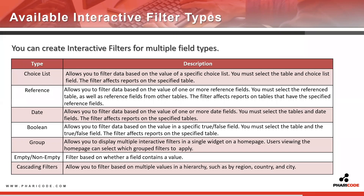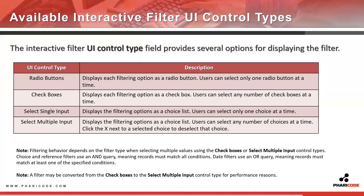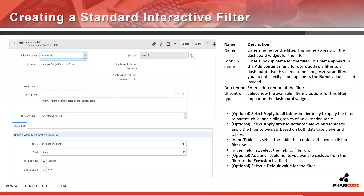ServiceNow offers seven different types of filters that you can create. The selection is limited, so if there are other field types that you want to filter on, you would need to create your own custom filters. For the standard ones, you have choice, reference, state, and boolean field types. You can also create group filters to display multiple interactive filters in a single widget, filter based on whether a field contains a value or not, and cascading filters that allow you to filter based on multiple values in a hierarchy. The UI control type gives you options for displaying the filter as radio buttons, checkboxes, or single or multiple input choice lists.